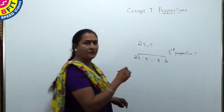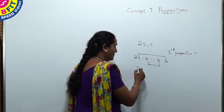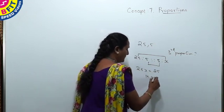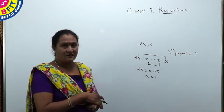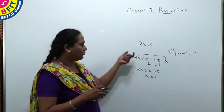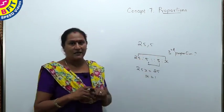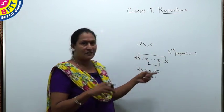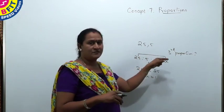Using the concept of product of extremes equal to product of means, we get 25x = 5×5 = 25, so x = 1. Students may get confused about how to find the third proportion when only two numbers are given. The method is: repeat the second number, take x in the fourth place, and solve using product of extremes and means. Here x = 1, which is the third proportion.